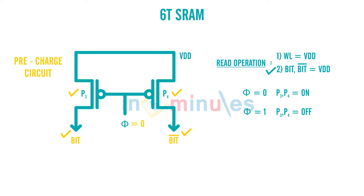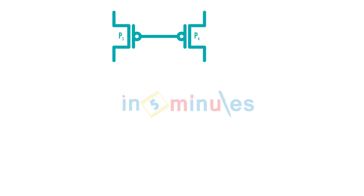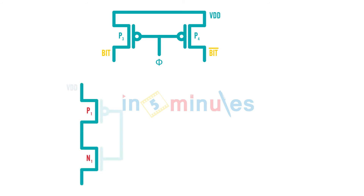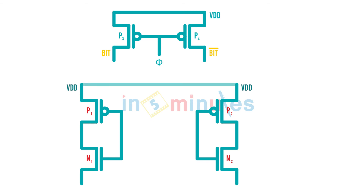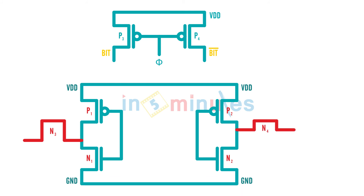Let's see how the diagram will look with the pre-charge circuit. This is the pre-charge circuit, this is phi. We just saw that this node equals VDD — we call this point 'bit' and this one 'bit bar.' Below it is our six-transistor SRAM, which we know how to draw by now. We also need to include our NMOS transistors.